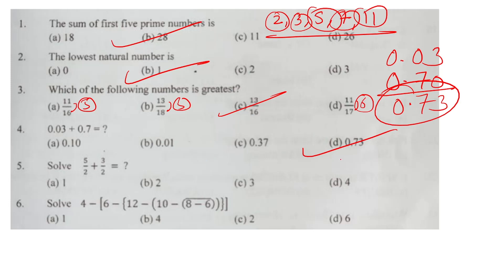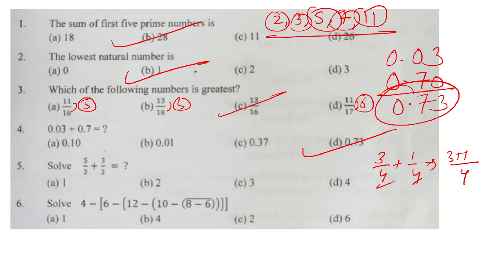Question number five: three by four plus one by four. LCM is four, so three plus one equals four over four. Then five by two plus three by two — our answer will be option number D.